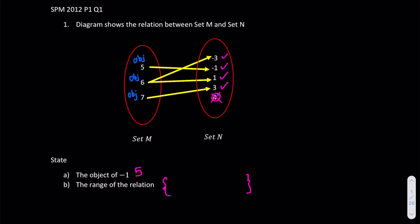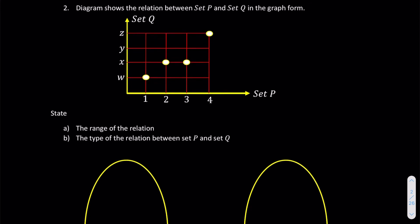So 4 is not inside the range. So I will say the range is eventually negative 3, negative 1, 1, and 3. So that's all for question number 1.